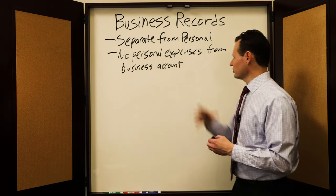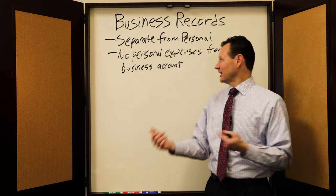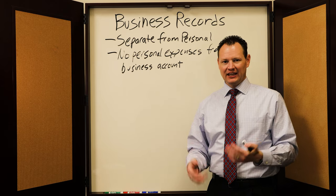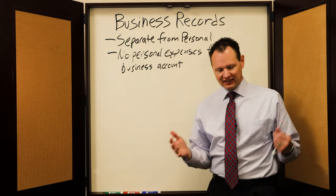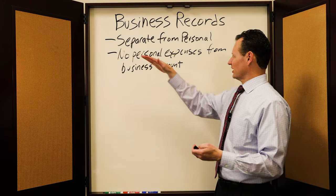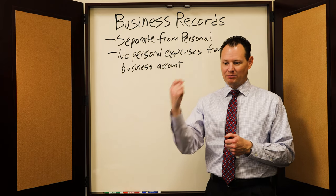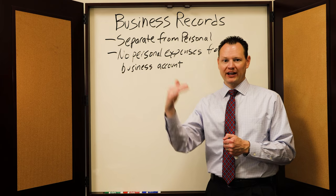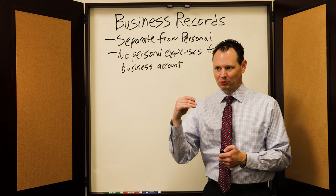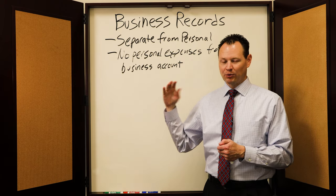What happens when you run personal expenses through your business account is that if you get audited, the IRS starts seeing all these personal expenses — even if you didn't deduct them — it makes them immediately suspicious of everything in your accounting and on your tax return. If they see personal expenses coming out of a business account, it's going to make them want to look even harder, thinking maybe you caught those personal expenses but there could be something else in there that you forgot to pull out as a business deduction.